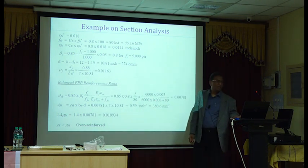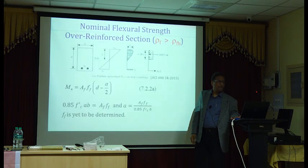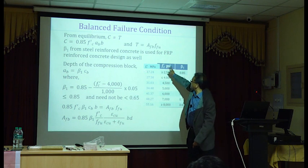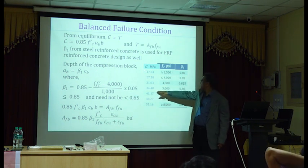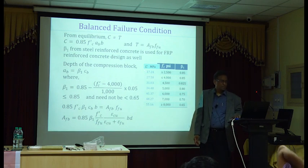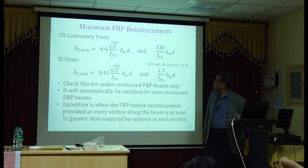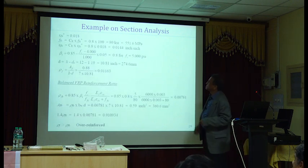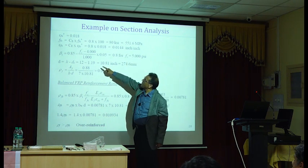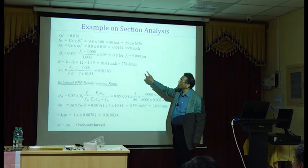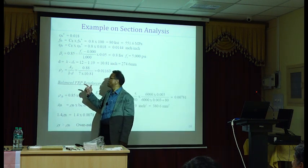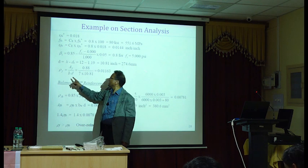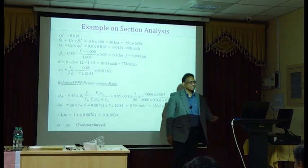And also we have a table somewhere. See this table? So about 35.5 is close to 0.8. So beta 1 is 0.8 for F prime C of 5,000 PSI. Effective depth is 274 millimeter. Row F is FRP reinforcement ratio. The definition of row F is area of fiber bars, FRP bars, over B times D. So that's equal to 0.01163.